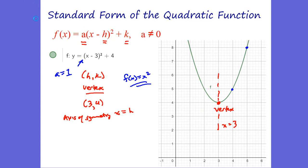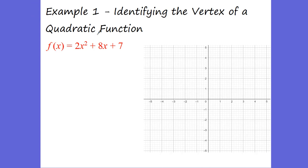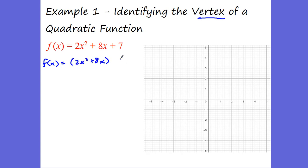This is what we call the standard form, or vertex form, of the quadratic equation. Let's do example 1: we want to identify the vertex by putting it into vertex form. We're going to group the x values together — 2x squared plus 8x — and put the 7 outside. After grouping, we're going to factor out a 2, leaving us with x squared plus 4x inside.